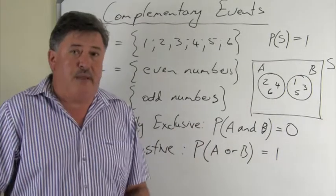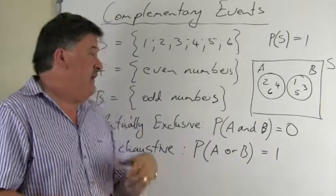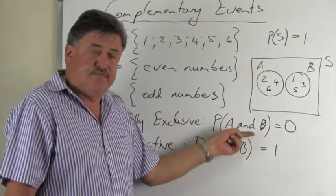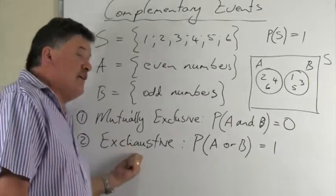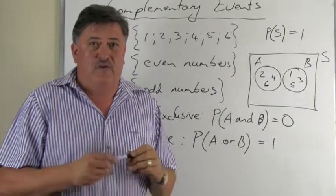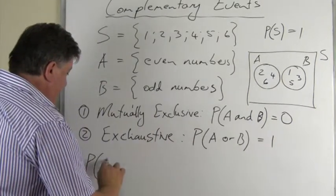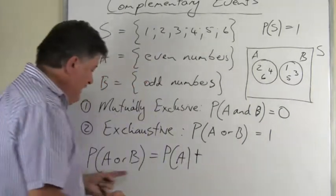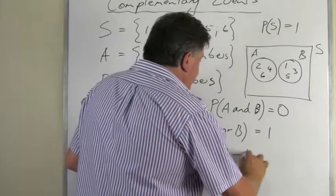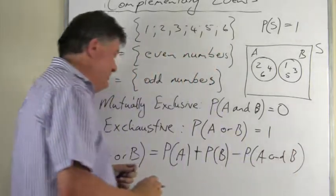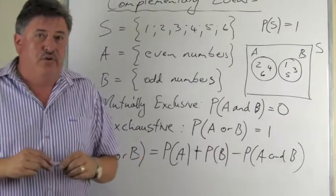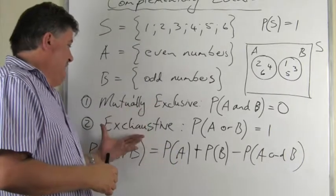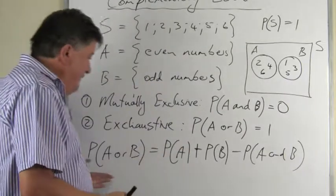It is always very important to remember: whenever a problem says the events are mutually exclusive, the P(A and B) equals zero. When the problem says the events are exhaustive, the P(A or B) equals one. Now, going back to our inclusive principle: P(A or B) equals P(A) plus P(B) minus P(A and B). Please remember this rule is always true — whether events are inclusive, exclusive, exhaustive, or complementary, this rule always holds.